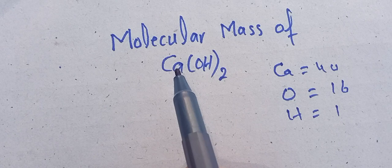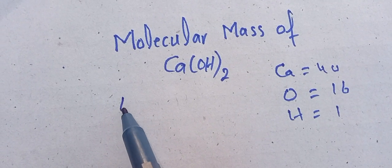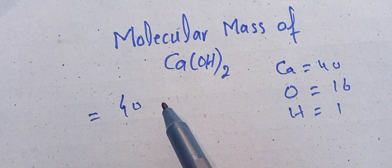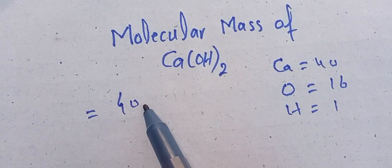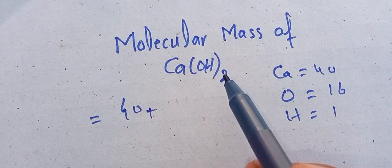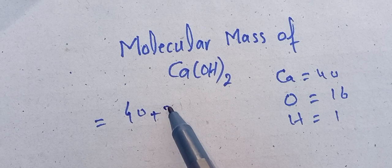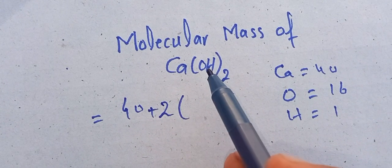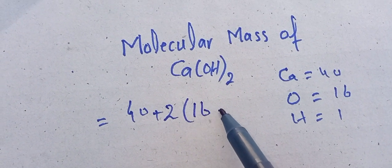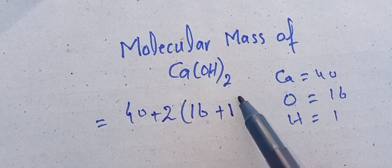So students, calcium has 40 grams per mole, and we have 2 moles of hydroxyl groups. Oxygen has 16 grams per mole, hydrogen has 1 gram per mole.